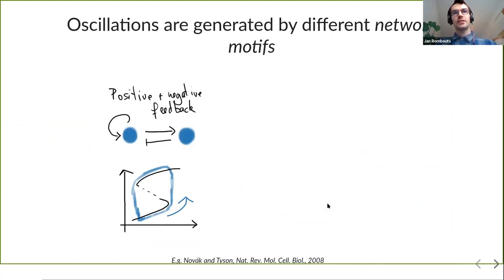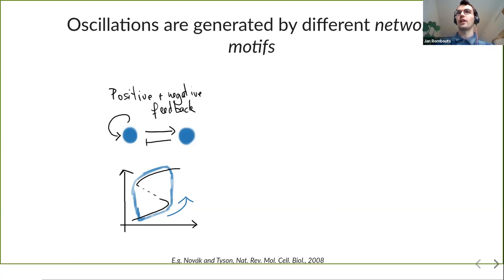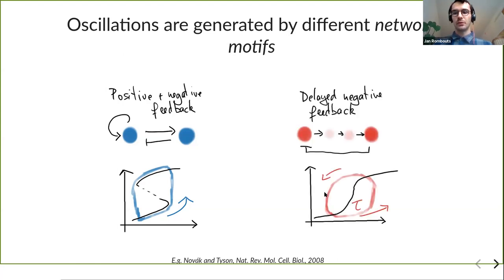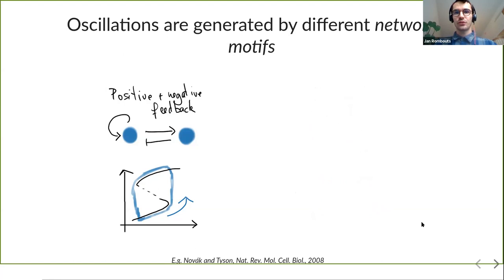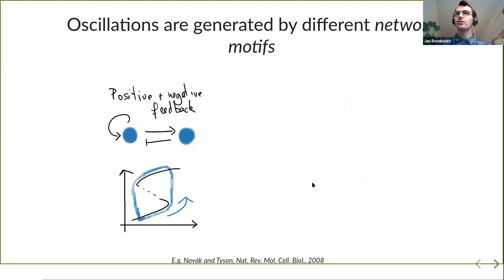I want to discuss two particular network motifs, as they are called, that are often found in such reaction networks underlying oscillations. There are more different kinds of motifs that can produce oscillations — the paper by Novak and Tyson is a classic reference for that. I want to highlight two motifs that often generate oscillations because they will come back later in my presentation.